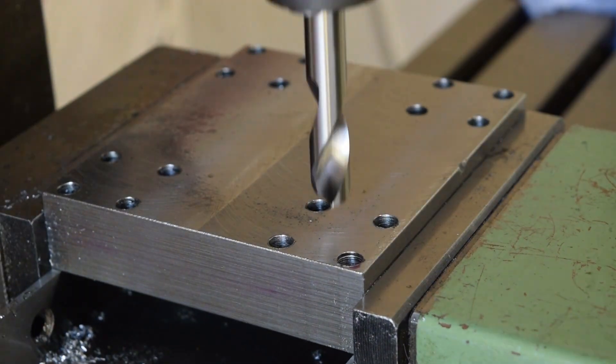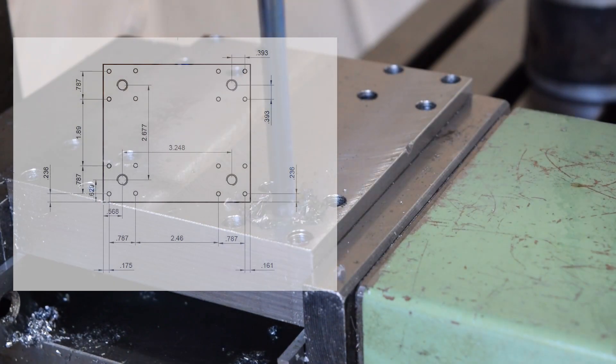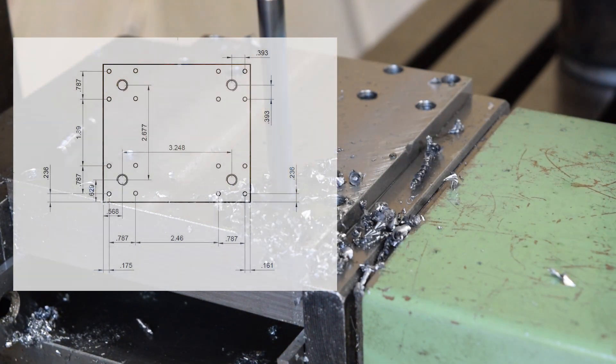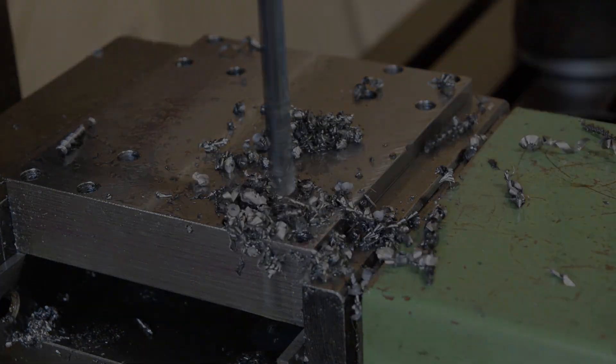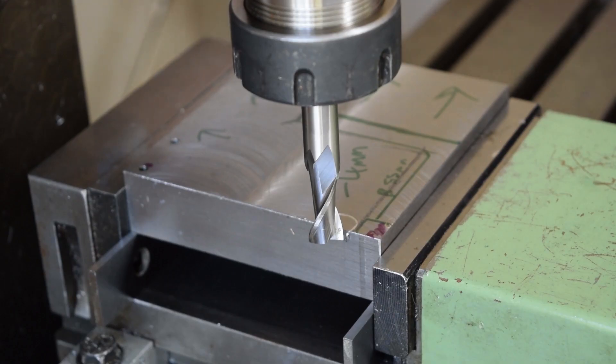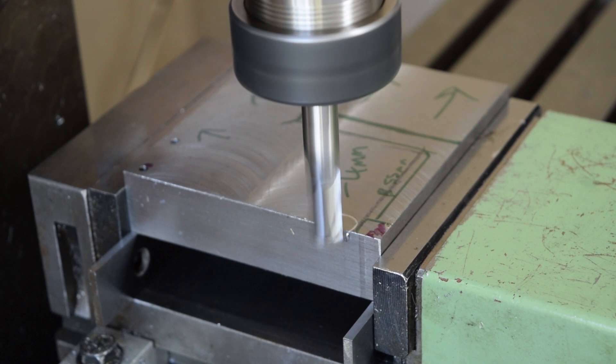You can see here how the holes should be, and they are counterbored to accept the M3 bolts. I was also drilling a central hole for each of the four bolt patterns, and this is where the top part would bolt down.